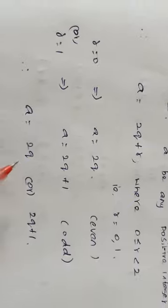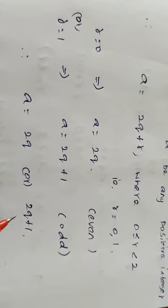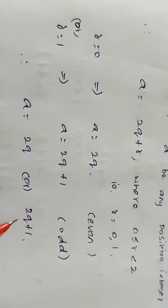To understand this: if you substitute Q equal to any number — odd or even — you can get only an even number from the first form. If you substitute any odd or even number in the second form, 2q plus 1, you can get only an odd number.